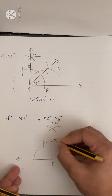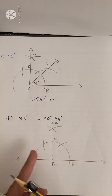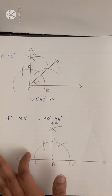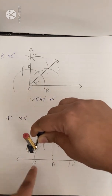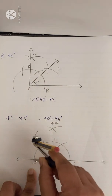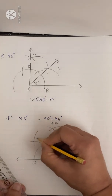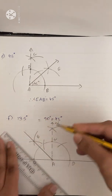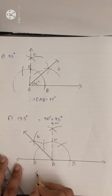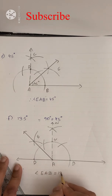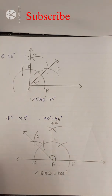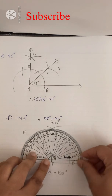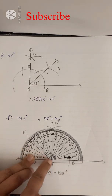Let this point be C and this be D. We are going to construct the bisector of 90 degrees. Since 135 is coming to this side, we are constructing to the left side. With C as center, take a radius greater than half of CD and draw an arc. With D as center, draw another arc. Let this intersection point be E. Join A and E. Angle EAB equals 135 degrees. You can measure using your protractor — the ray AE passes through 135 degrees.